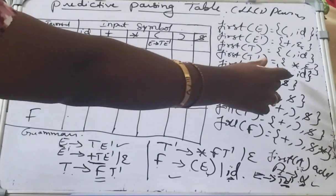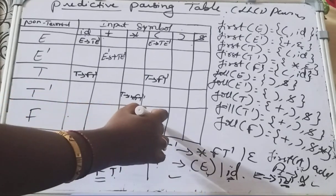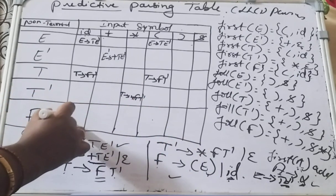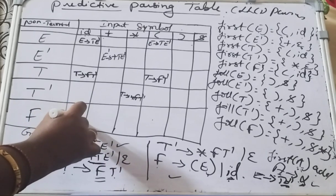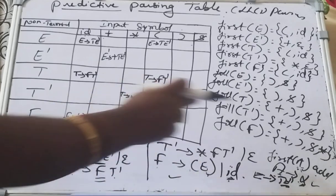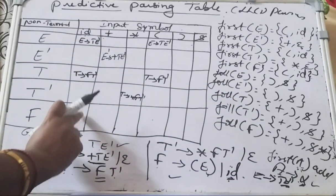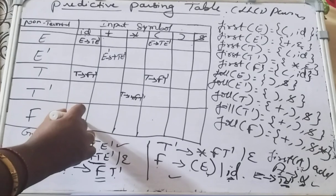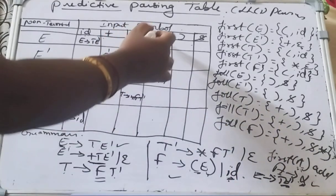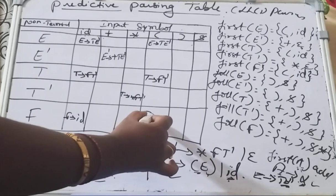Next for F: FIRST(F) = {open parenthesis, id}. F has two productions. Under the id column, add F derives id. Under the open parenthesis column, add F derives (E). That completes filling the table entries using FIRST sets.